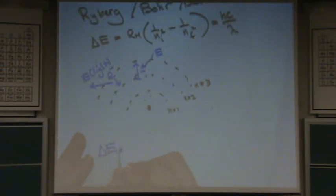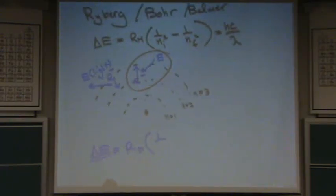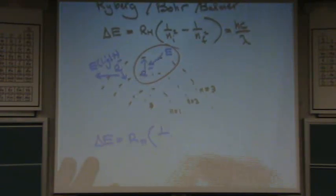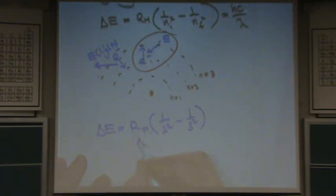Change in energy equals, for this sample here, Ryberg constant, 1 over, and let's just take, I'll circle it. Let's just take this example right there, the one I just circled. So, what's your n initial? It's 2, it's on the second level, and it goes up to the third level. And then your Ryberg constant, that should be given, I think it's 2.178 times 10 to the minus 18 joules.